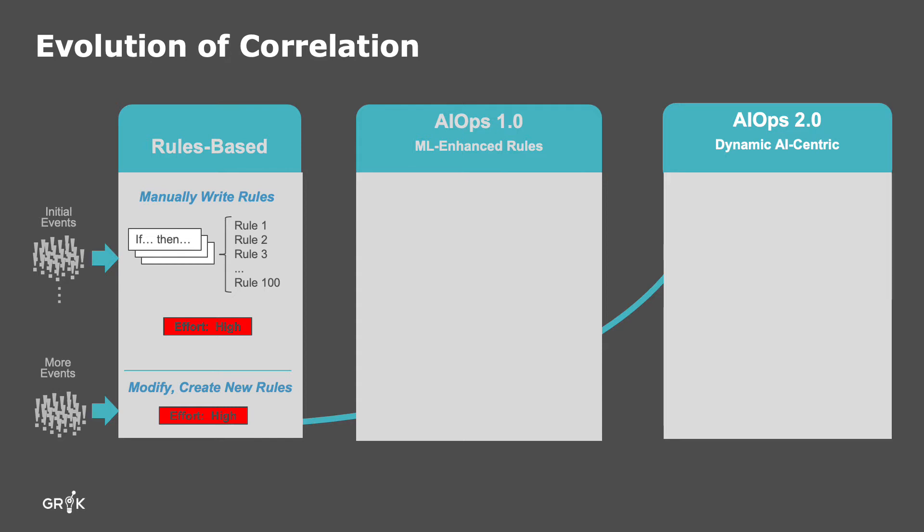First, teams need to rely on network or service topology through discovery or a CMDB, which is rarely accurate or available. Also, it takes a lot of time, resources, and tribal knowledge to manually create these rules. And if these initial efforts are successful, the rules multiply into hundreds of rules, then to thousands of rules to cover all different types of situations. Due to the complexity of managing the huge number of rules, this approach quickly becomes unmanageable due to the many large numbers of devices, newly introduced technologies, and constantly changing environments.